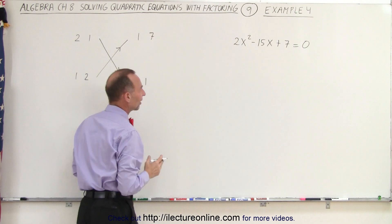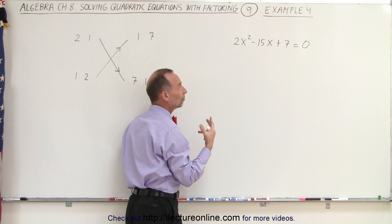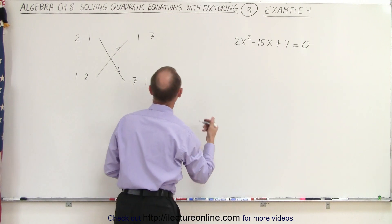Now, what about the signs? Since this one is positive and the middle term is negative, that means both of the numbers we're looking for must be negative numbers.